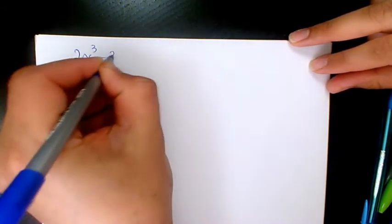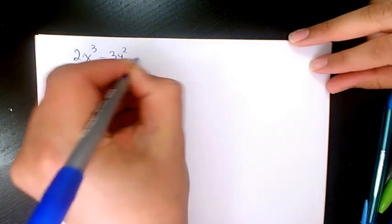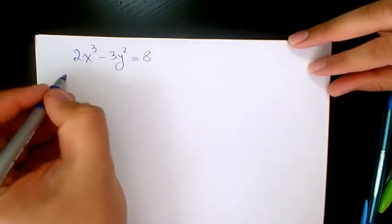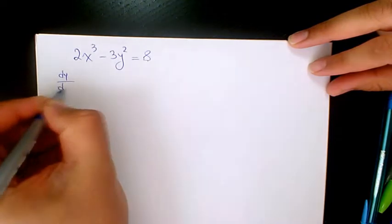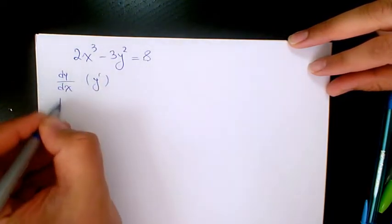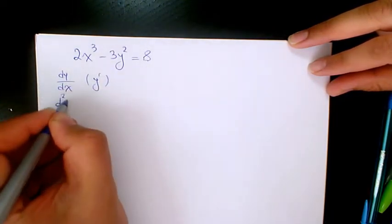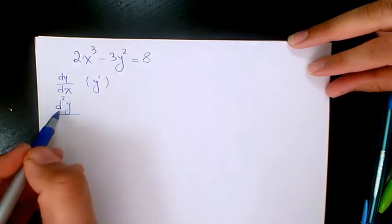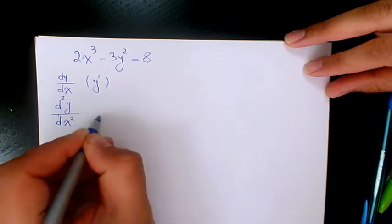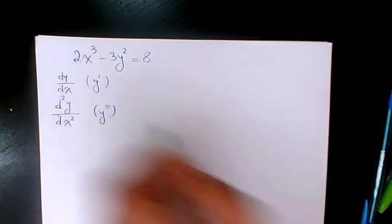Next example: we have 2x³ - 3y² = 8. In this example we need to find dy/dx, or y prime, and also the second derivative, which is shown by d²y/dx² or y double prime.